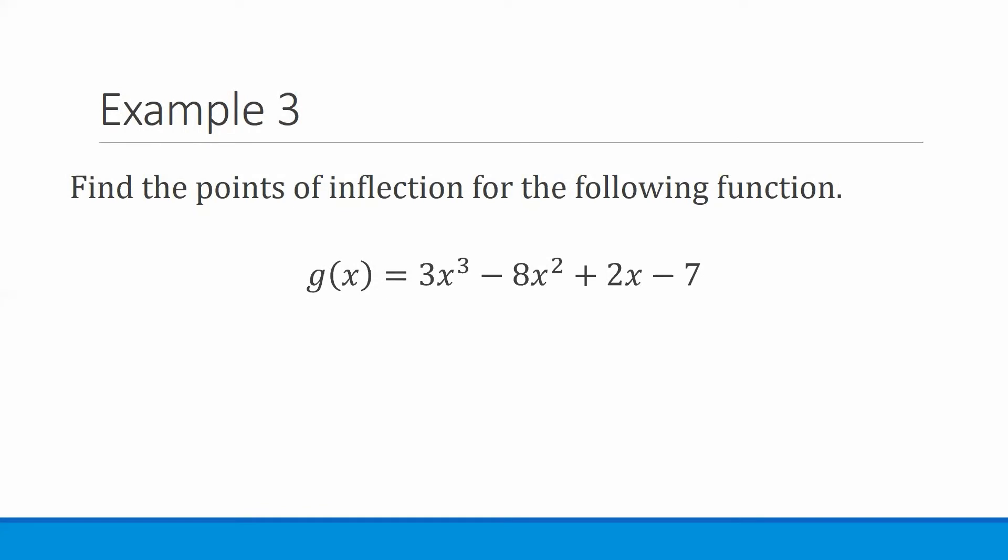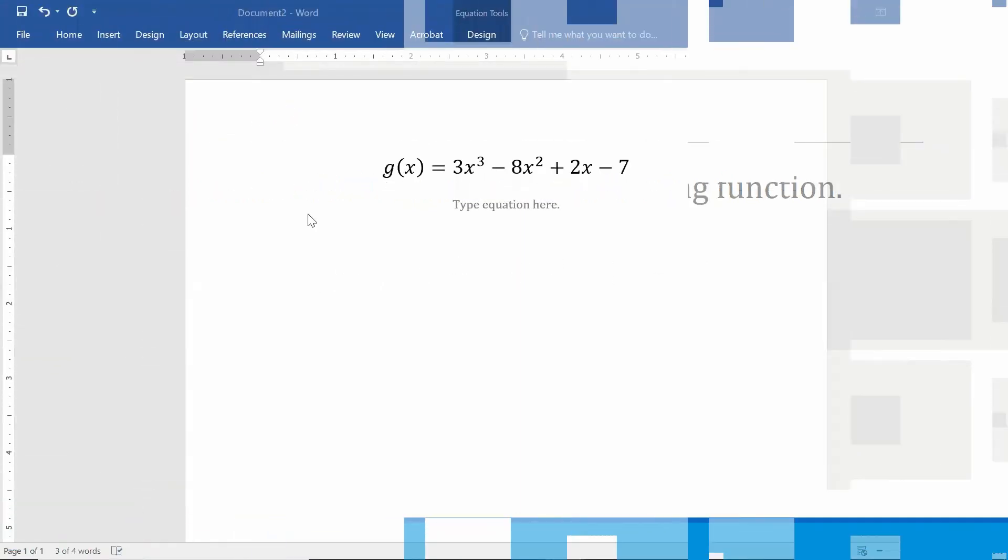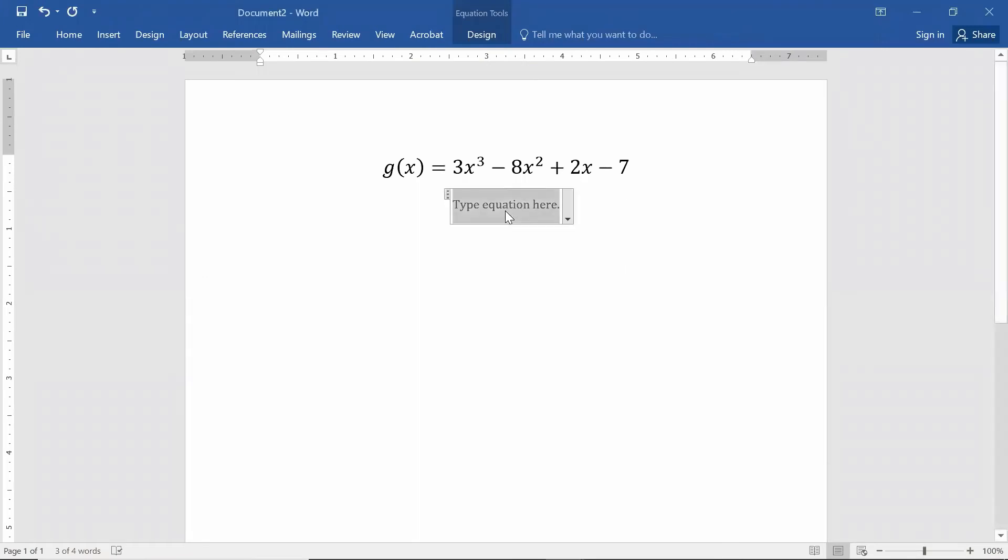Let me find all of the points of inflection for the following function. g of x equals 3x to the third minus 8x squared plus 2x minus 7. We've already done the necessary work to find the points of inflection in a previous problem, so we'll do this pretty quickly, but I want to do it from scratch again.